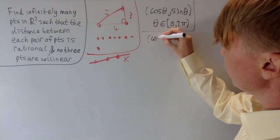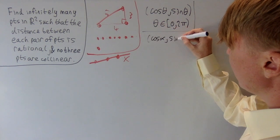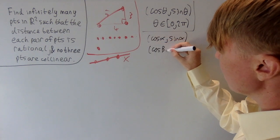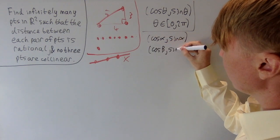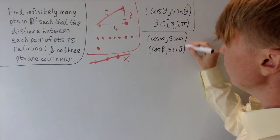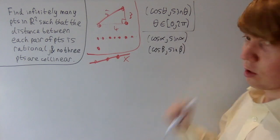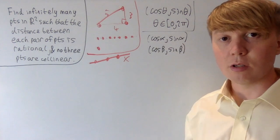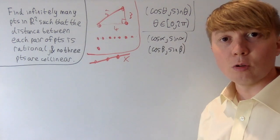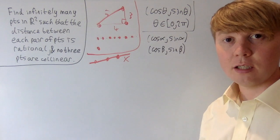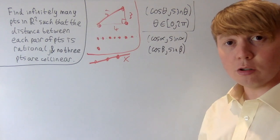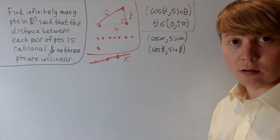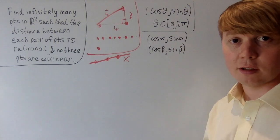Say we've got a point (cos α, sin α) and another point (cos β, sin β). We want a nice way of finding the distance between these 2 points so that we can choose our alphas and betas to give rational distances. We could just plug this into the distance formula, but it gets quite nasty with the square root and having things squared.